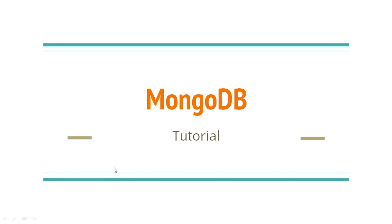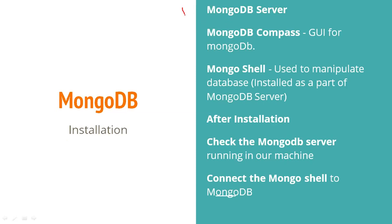Hello everyone, welcome to the MongoDB tutorial. Let's get started with the MongoDB installation process. In this installation, we will discuss MongoDB server, MongoDB Compass, and Mongo shell. MongoDB Compass is a graphical user interface for MongoDB. Mongo shell is used to manipulate the MongoDB database. Mongo shell will be installed as part of the MongoDB server. To install MongoDB Compass, we check a checkbox while installing the MongoDB server itself.